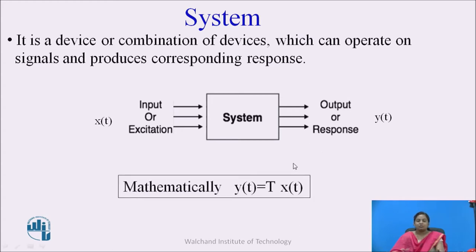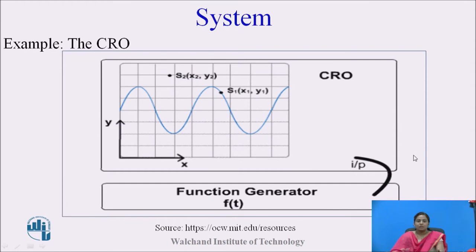Theoretically, this system can be represented as y(t) = T{x(t)}. One example of a system is the CRO. Here the input to the CRO is provided through a function generator, which is f(t). This CRO acts as a system and transforms the input from the function generator into an output in the form of an image displayed on the CRO. The output is s(x, y), and its independent variable is space, while for the input, the independent variable is time.